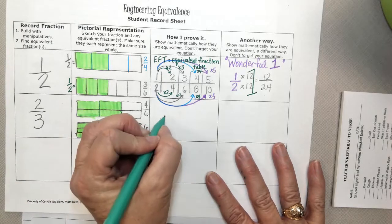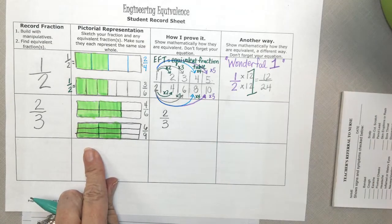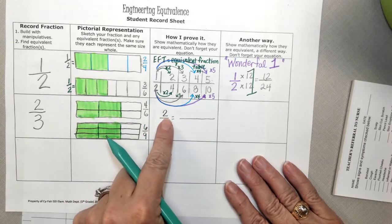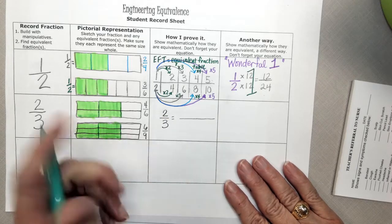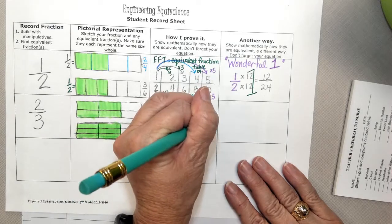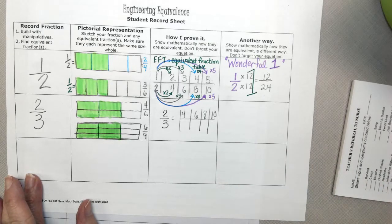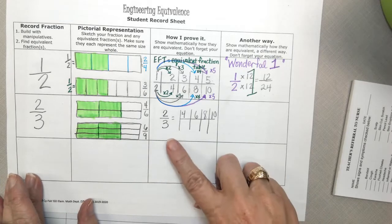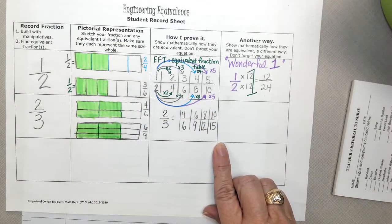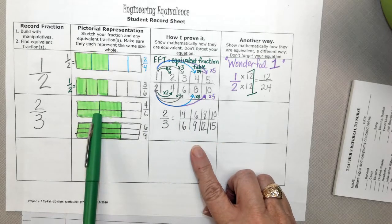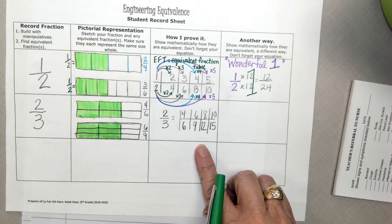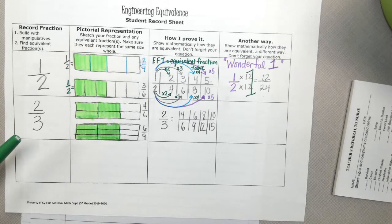Write this down with me. 2 thirds. Maybe you're beyond pictures, but you're not ready for wonderful 1. One thing you could do is you could make an EFT. That's skip counting by 2's on the top and skip counting by 3's on the bottom. 2, 4, 6, 8, 10. Counting by 3's on the bottom, 3, 6, 9, 12, 15. Hey, look. Is 4 sixths our picture model in our EFT? Is 6 ninths our picture model in our EFT? So we could really continue with this on and on forever to find equivalent fractions, right?